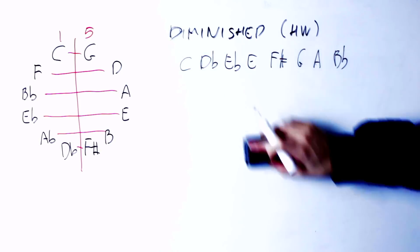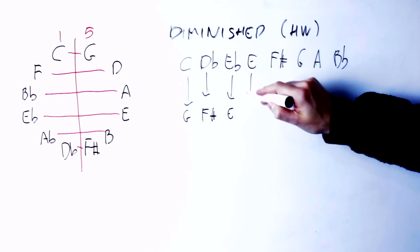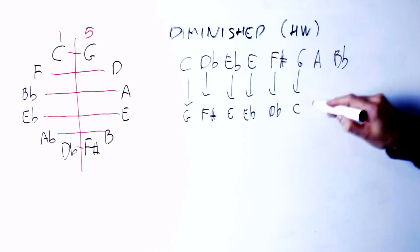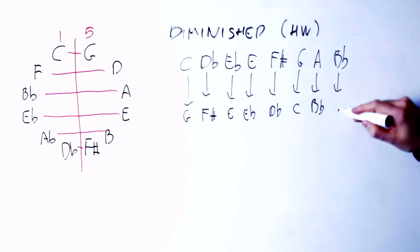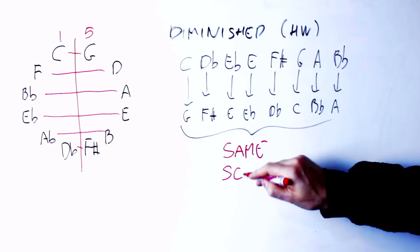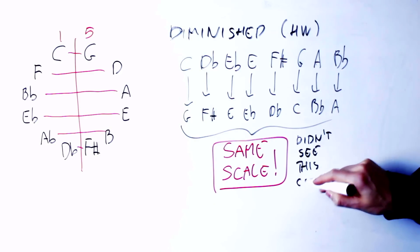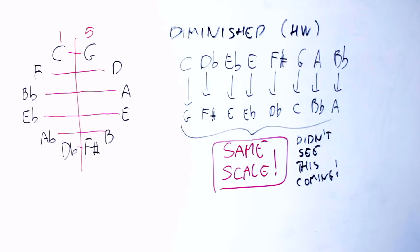If I flip those notes around, C becomes G, D flat becomes F sharp, E flat becomes E, E becomes E flat, F sharp becomes D flat, G becomes C, A becomes B flat, B flat becomes A, and the scale maps to itself. The negative harmony of the diminished scale is the diminished scale itself. This is why the scale sounds neutral, because this scale is its own psychological opposite. You can make this scale sound happy or sad, elated or depressed depending on the context in which you use it.